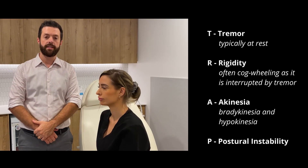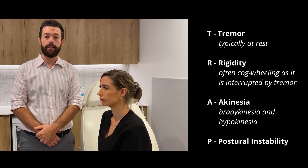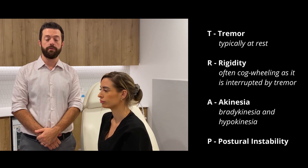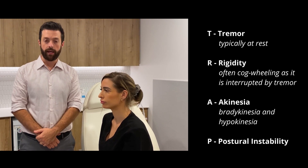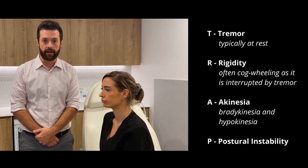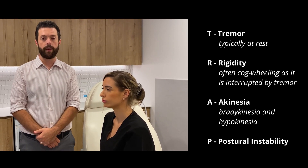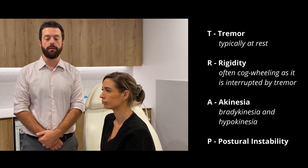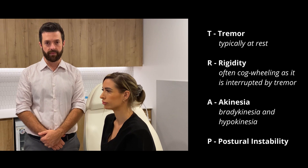The four cardinal features of Parkinsonism are remembered by the mnemonic TRAP: T is for tremor, R is for rigidity, A is for akinesia, and P is for postural instability.